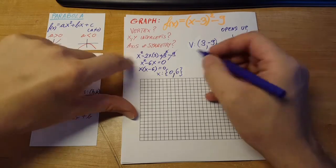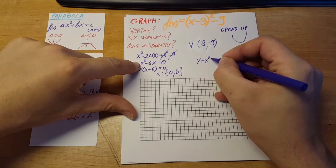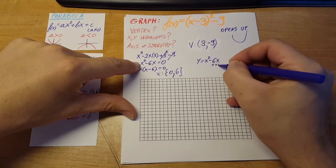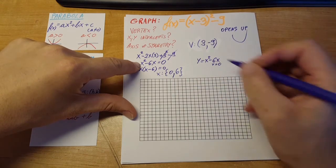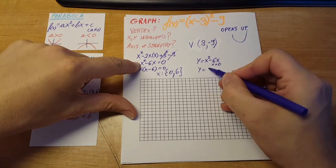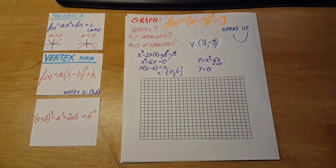If we want to find the y-intercept, we can take this, y equals x squared minus 6x. We'll put the x equal to 0. If we plug in, we'll see that our y will be equal to 0. So alright, let's start graphing.